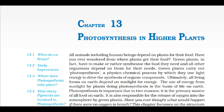Have you ever wondered from where plants get their food? Green plants have to make or rather synthesize the food they need, and all other organisms depend on them for their needs. Green plants carry out photosynthesis, a physico-chemical process by which they use light energy to drive the synthesis of organic compounds. Ultimately, all living forms on earth depend on sunlight for energy.